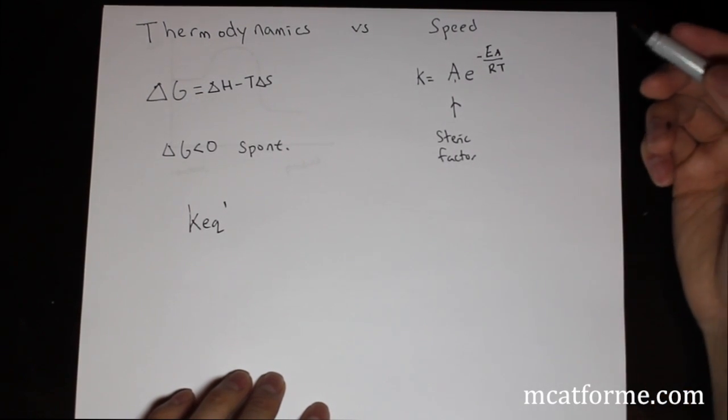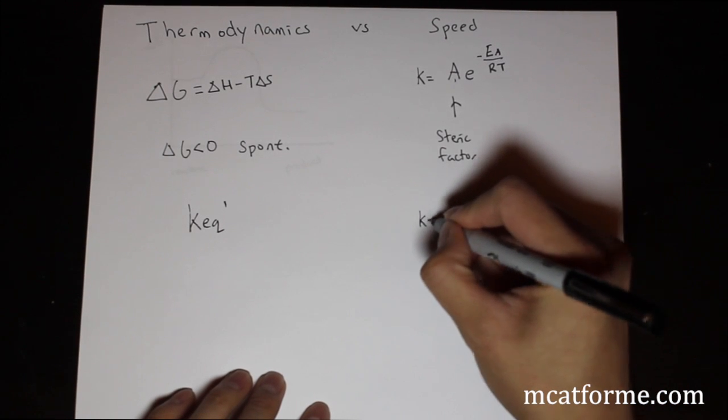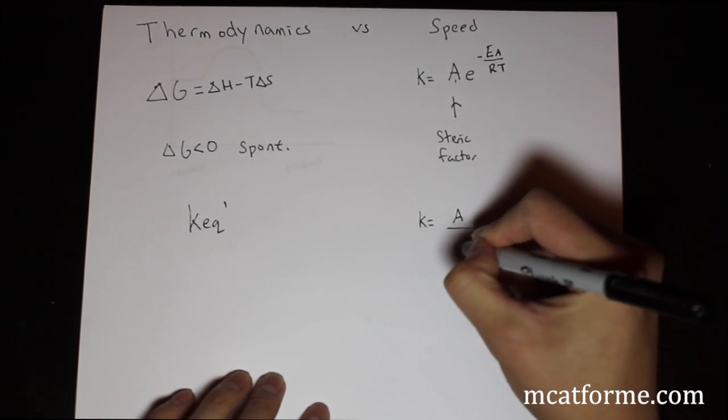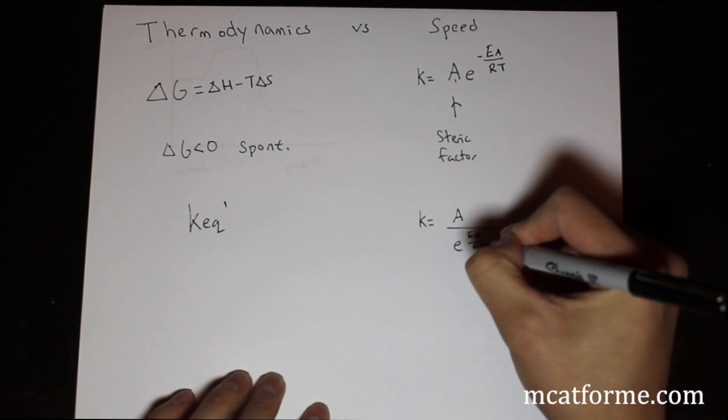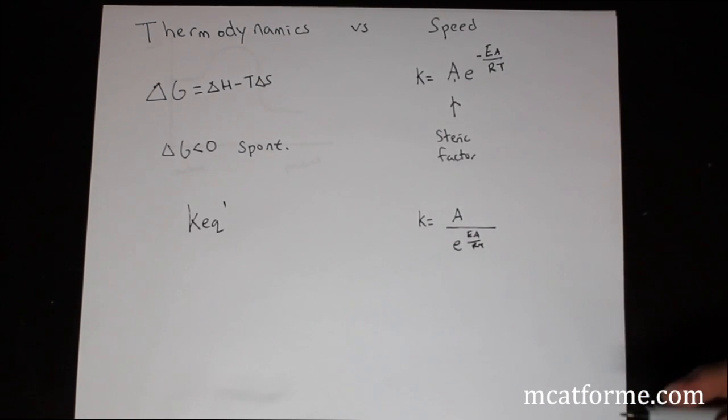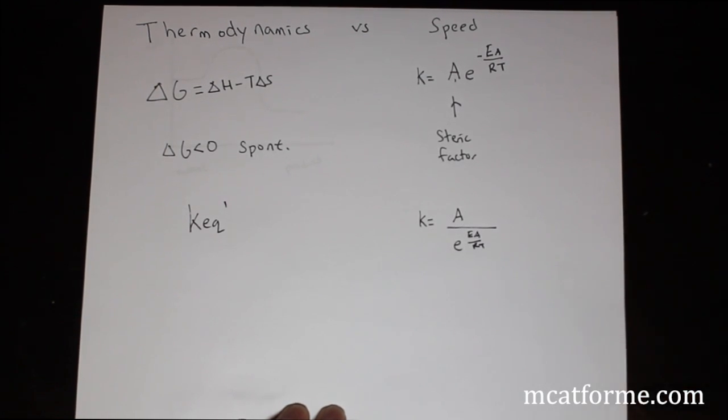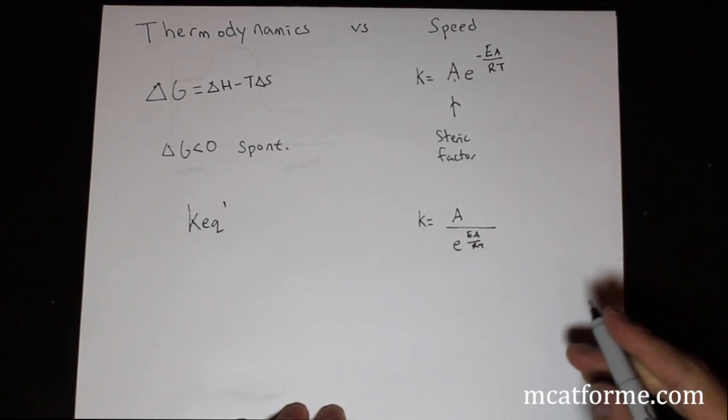So EA is activation energy and temperature is T. So what this is telling us is that K equals A over e to the EA over RT, because we just moved that over to the bottom because it was to the negative power. And e is just that, with the natural log you have that e, so it's just a constant. So don't worry about that.